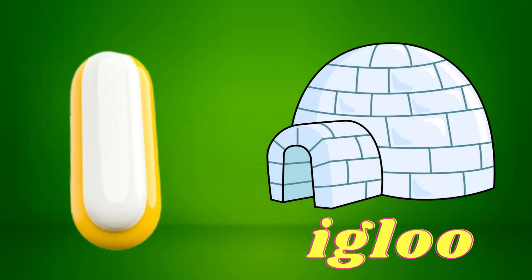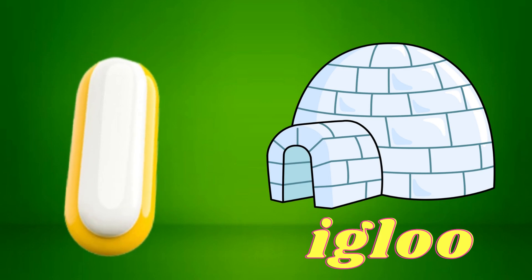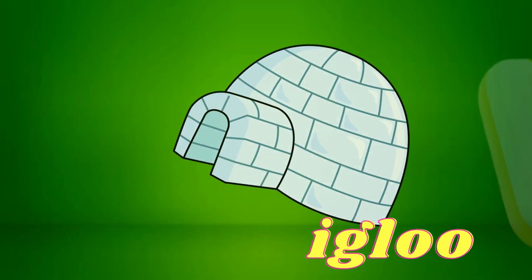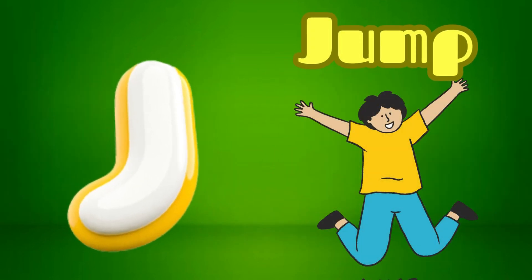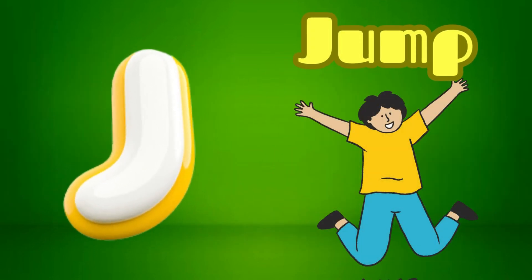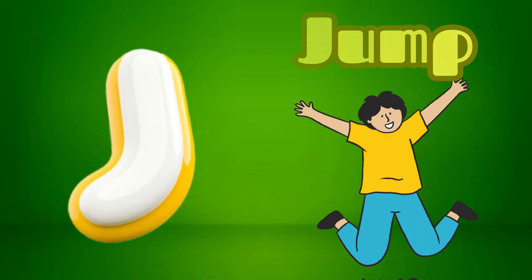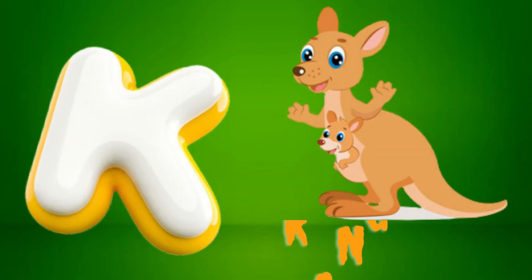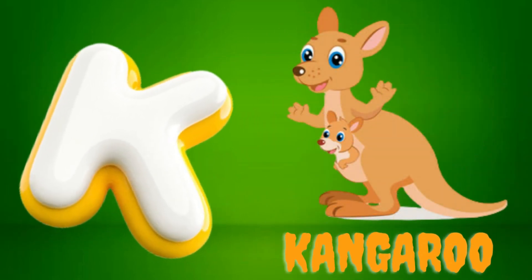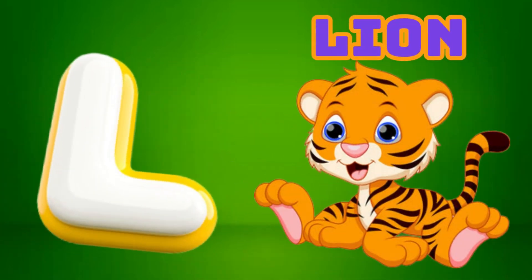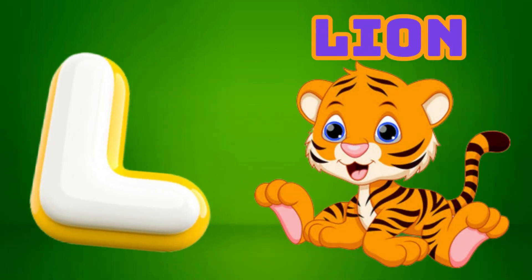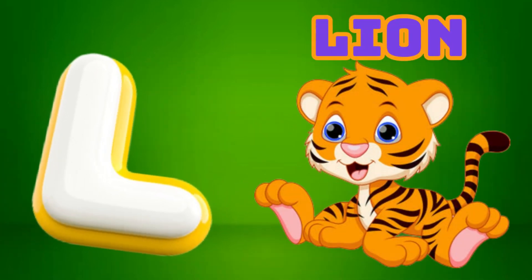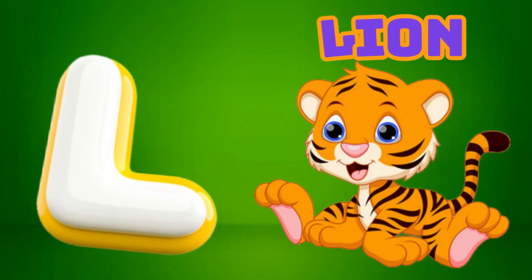I is for Igloo, I-I-Igloo. J is for Jump, J-J-Jump. K is for Kangaroo, K-K-Kangaroo. L is for Lion, L-L-Lion.